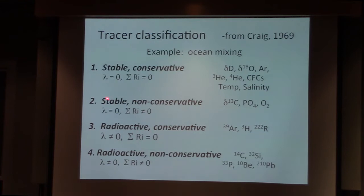Stable but has reactions. Carbon-13, that's a great example. It's involved in photosynthesis, that's a chemical reaction, but it's a stable isotope. Phosphorus, oxygen, so these make great tracers in the oceans.